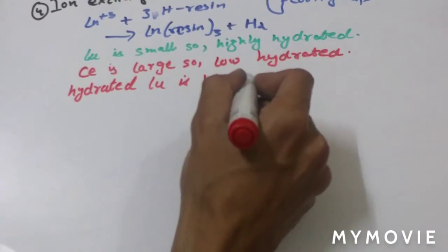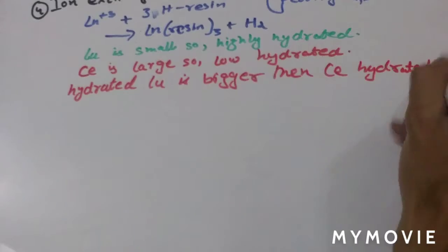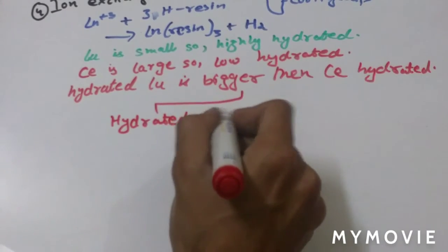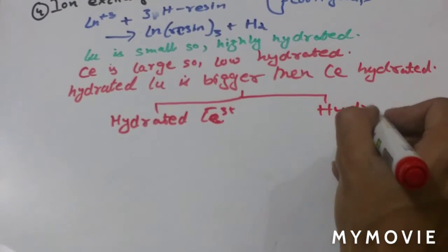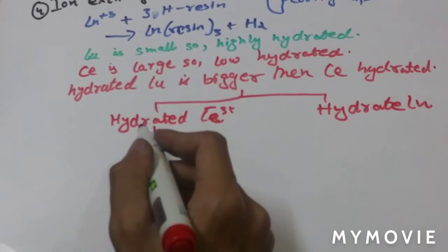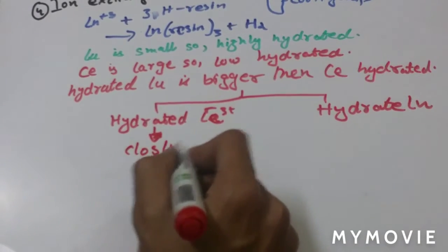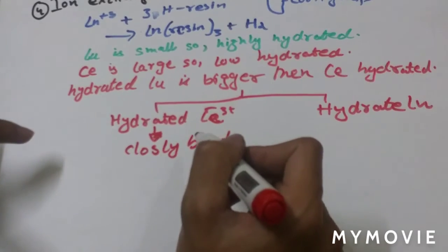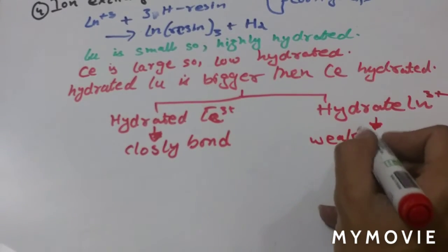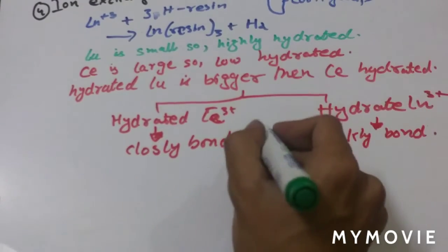Hydrated lutetium is bigger than hydrated cerium. Hydrated cerium is closely bonded because its actual ionic size is small, whereas hydrated lutetium is weakly bonded due to the larger hydration shell.